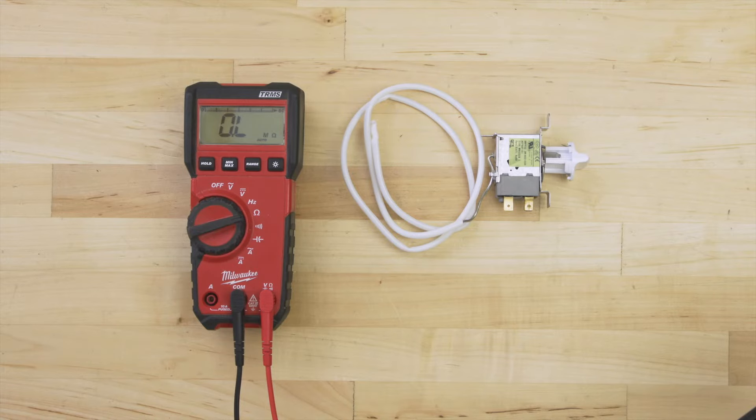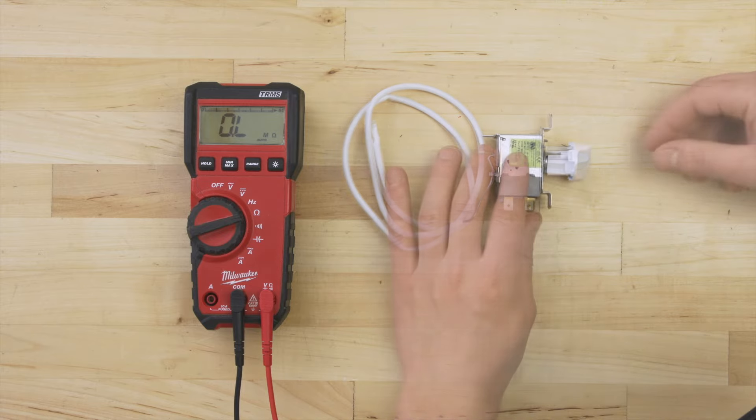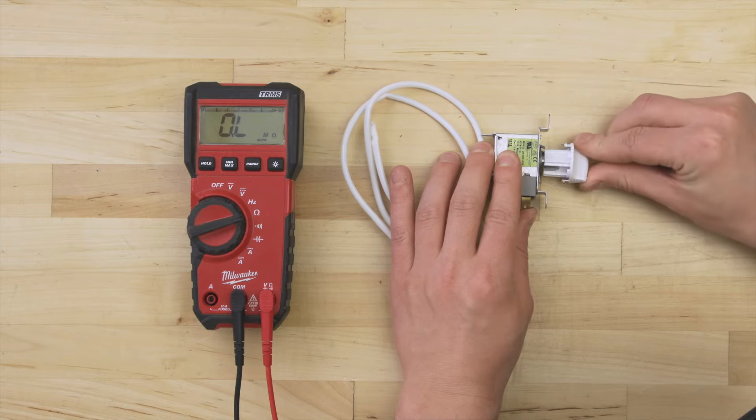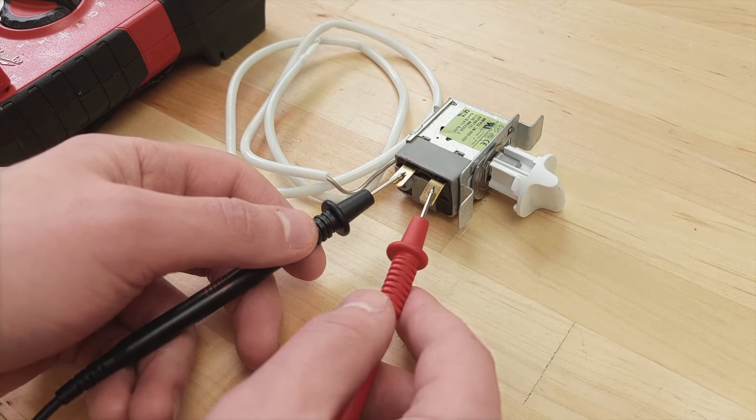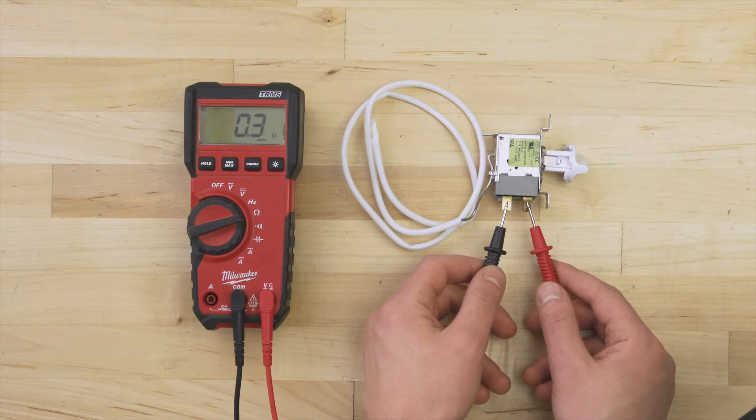Set the multimeter to the ohms or resistance setting. With the dial turned to any cold setting, test between both terminals. You should get a continuity reading between 0 and 1 ohm at room temperature.